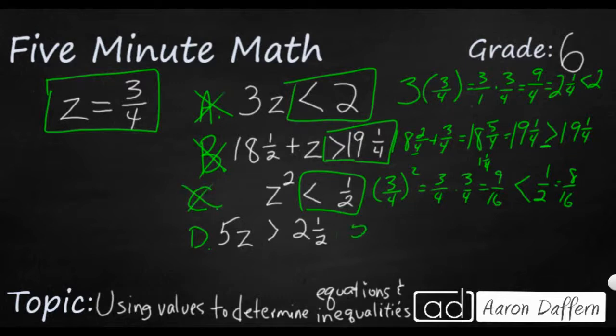So 5z. I'm going to go ahead and make it 5 over 1 because I know I'm going to have to multiply that by 3 quarters. So that's going to get me 15 fourths. Bring my inequality back. And that's going to be is greater than 2 and 1 half. Well, let's see what 15 fourths is. If you divide up, that's going to be 3 and 3 quarters. And that is definitely larger than 2 and 1 half. So that's our answer.